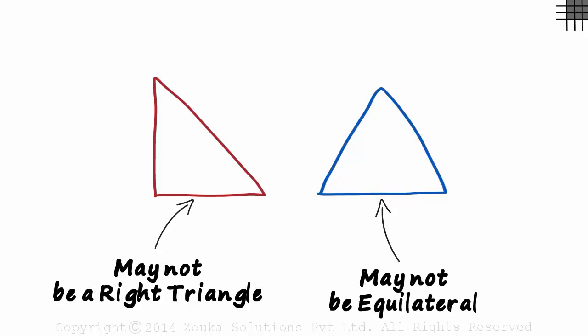Only if it's explicitly mentioned like this with a right angle symbol, or with markings which show that all sides are equal, can we know the type of triangle. Otherwise, make sure you remember, do not assume.